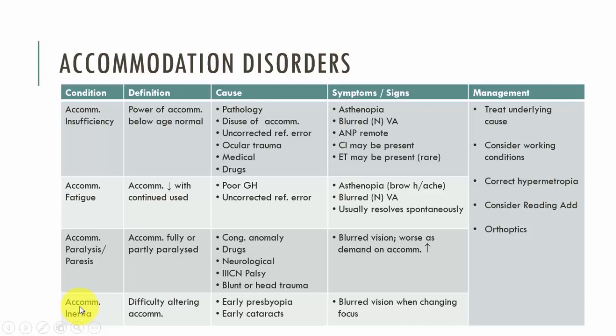Finally, we have accommodative inertia, which is where we have difficulty in altering accommodation. Given that all these patients have an issue of some type with accommodation, one of the main complaints they will present with is blurred vision. For those patients with insufficiency or fatigue, they will also typically have asthenopic symptoms.